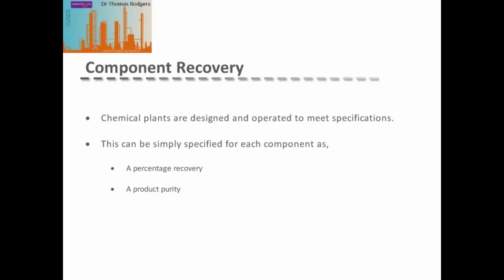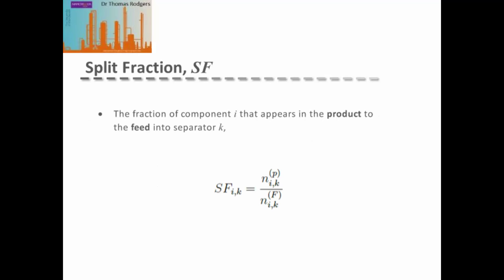These can be simply specified for each component as a percentage recovery, so for example 90% of component A from the feed must be in the top product, or they can be specified as a product purity, for example the top product must be 99% A.